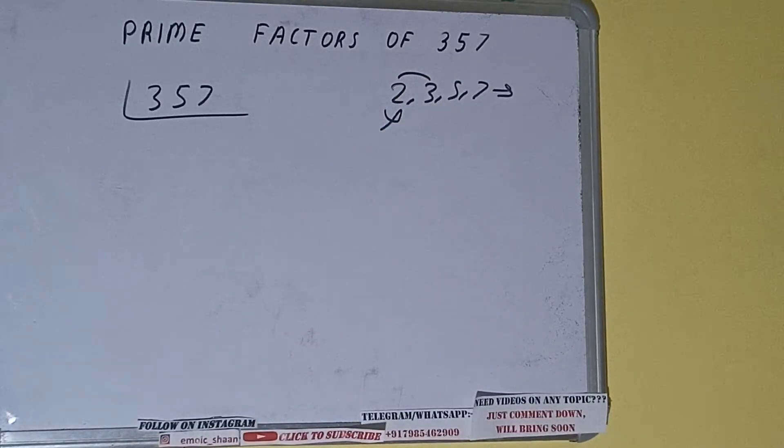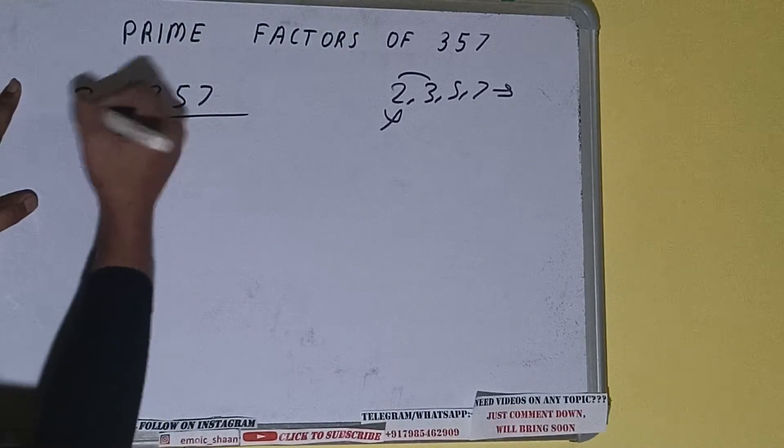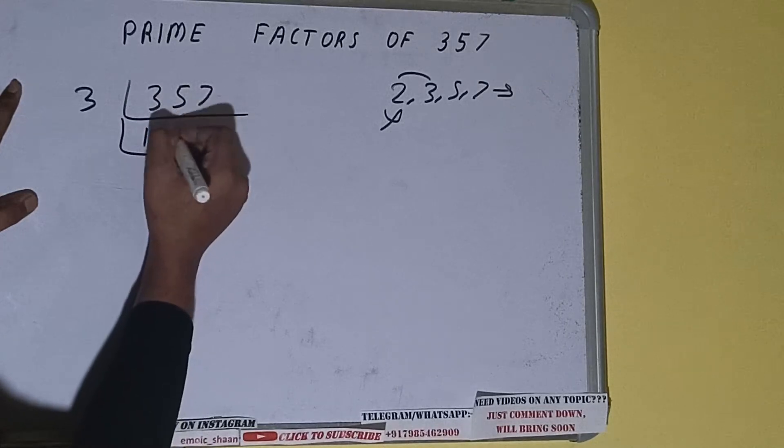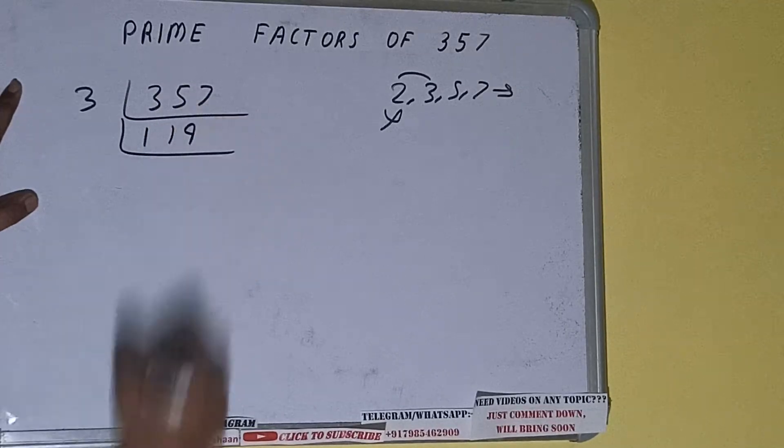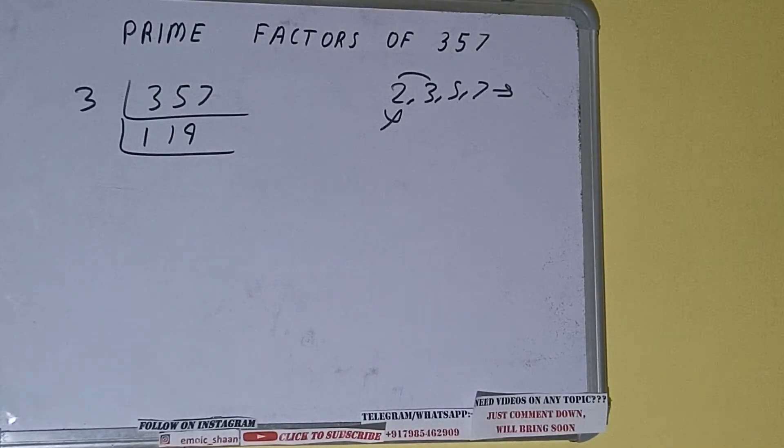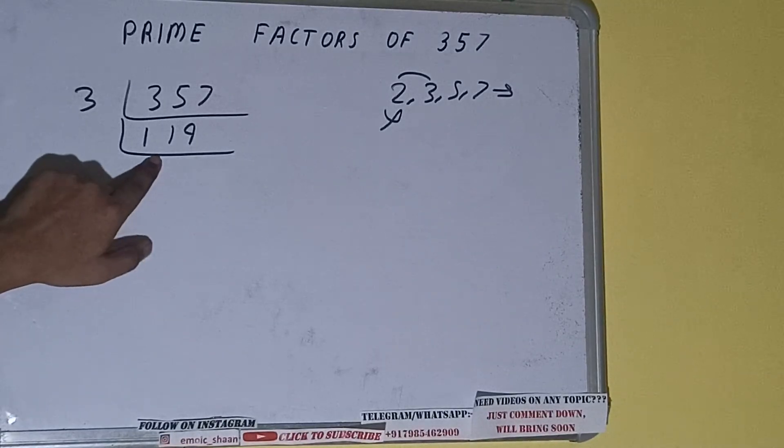Is it divisible by 3? We need to check: 3 ones are 3, 27. It is divisible by 3, so divide it. 357 divided by 3 gives us 119. Is 119 divisible by 3? We need to check: 3 threes are 9, 29. It is not divisible by 3.